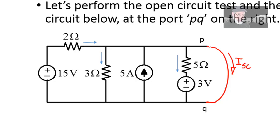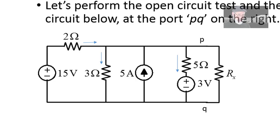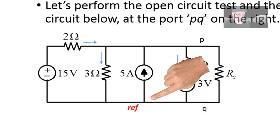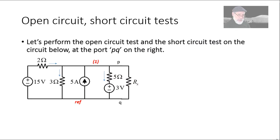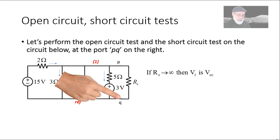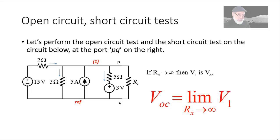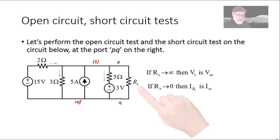To obtain Voc and Isc at that port, I connect an unknown resistor Rx. I choose this node as the reference. There is only one other node, which I label node one. If I let the value of Rx grow without bounds to infinity, then the voltage V1 of that node will tend to the open circuit voltage. So Voc is the limit of voltage V1 as Rx tends to infinity.